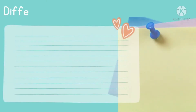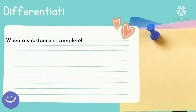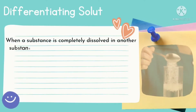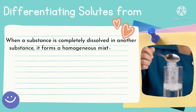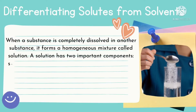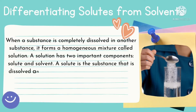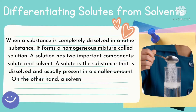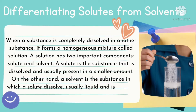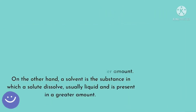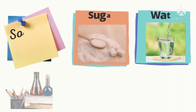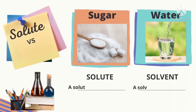You really understand the difference between homogenous and heterogeneous mixture. Now you are ready with our next topic. When a substance is completely dissolved in another substance, it forms a homogenous mixture called a solution. A solution has two important components, solute and solvent.